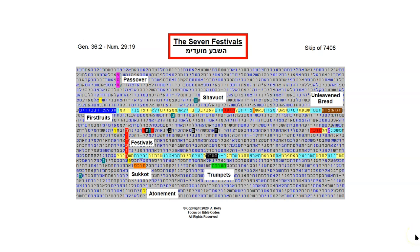Shalom. Today I'd like to show you a short Bible code about the seven festivals of Yahuwah. This will be part one of two. I want to keep this one simple and just to the point. We're in the midst of the fall festivals right now, so I thought this would be an appropriate time to look at a table like this.